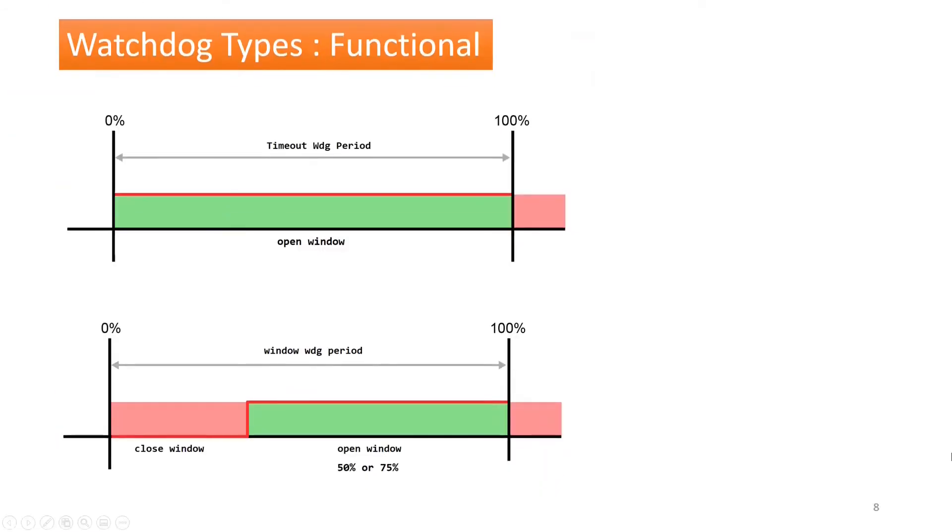Functionally, the watchdog is of two types: timeout mode and window mode. In timeout mode, watchdog trigger can be performed any time before watchdog timeout time. We can see in this animation it can take place here, here, or here and so on, which means the window is open for 100% of the time, so the trigger can be performed at any point of time.